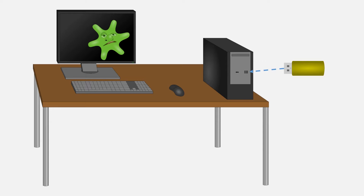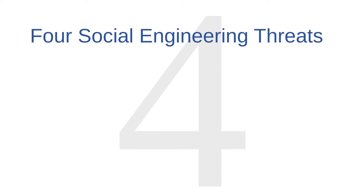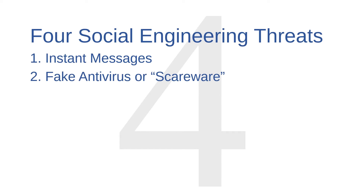The security testers engineered the situation so that common social practices would lead the employees to put the company's computers at risk. There are many other kinds of social engineering. Let's look at four common social engineering threats: instant messages, fake antivirus or scareware, emails, and phone calls.